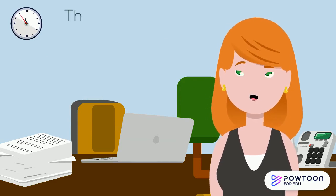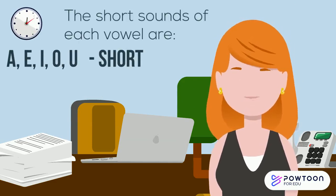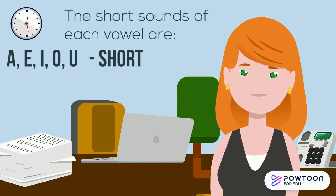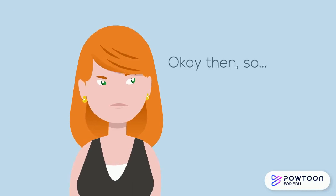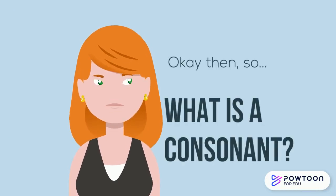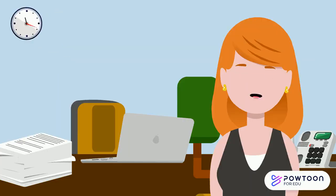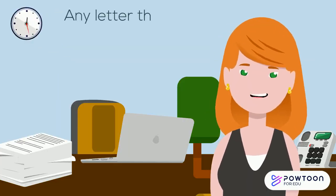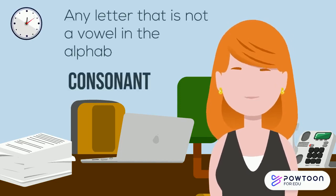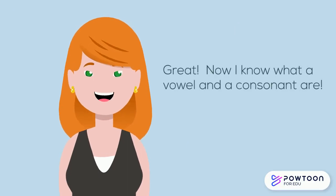The short sounds of each vowel are A, E, I, O and U. So, what is a consonant? Any letter that is not a vowel in the alphabet is a consonant. Great! Now I know what a vowel and a consonant are.